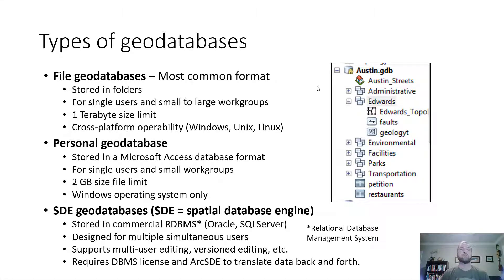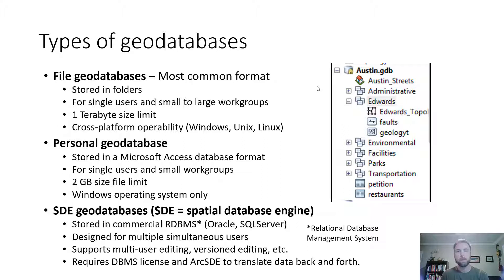Among geodatabases, there are actually three different types. First, the file geodatabase — the most common format. Second, the personal geodatabase — less common today but still useful. Third, the SDE (Spatial Database Engine) geodatabase, which builds on a commercial RDBMS like Oracle or SQL Server. If you're working at a large corporation — say Amazon or Google Maps — you'd be running on an SDE geodatabase, simply because the data is so large that personal and file geodatabases just aren't big enough. You'd connect your GIS to a large database server containing terabytes of data.